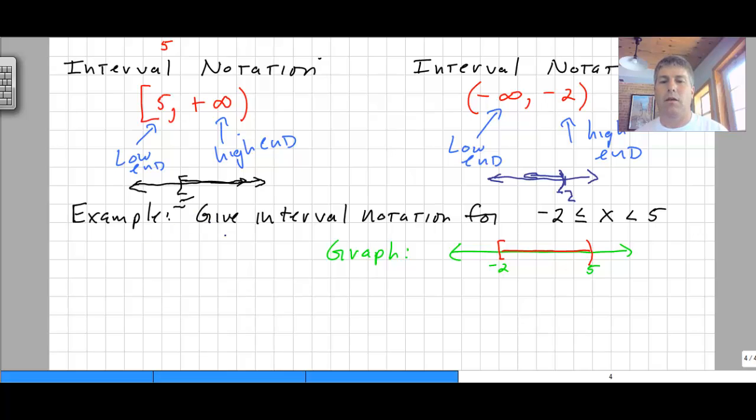So for example, we want to give interval notation for... Oh, here's something. X is greater than or equal to negative 2. And X is less than 5. So I've taken the liberty to put this on the number line for us. Okay? So we're graphing everything between negative 2 and 5. It looks like we're including negative 2 because we've got a bracket.